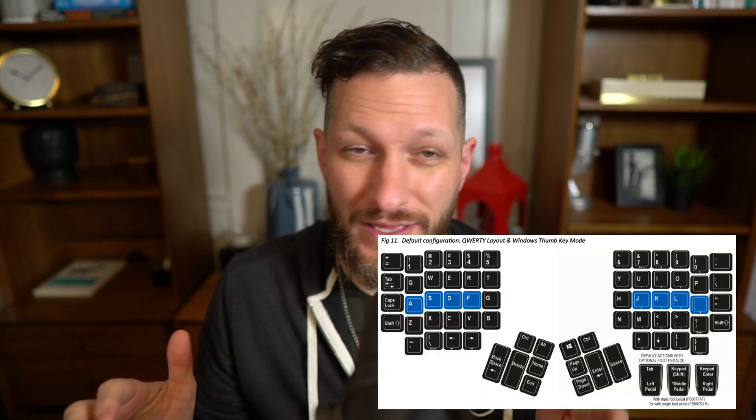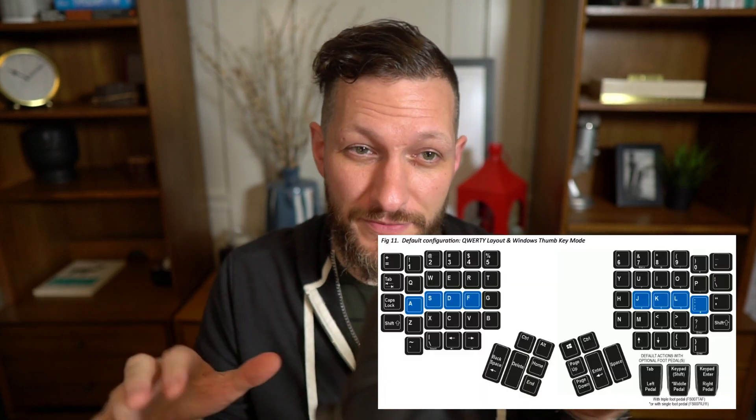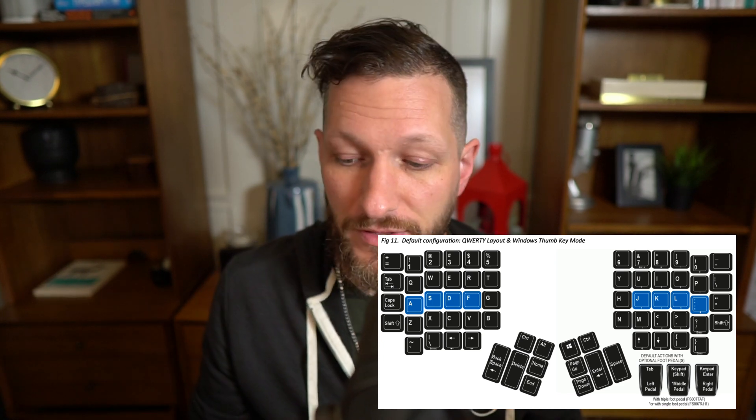At that same time I also switched to the Kinesis Advantage 2 keyboard, which you may have seen in previous videos. It is a freaking space station monster and it's amazing because they're concave, which is the way your hands naturally sit. It does have a learning curve because it uses a different layout — I think it's called ortholinear — basically a layout where a lot of things move to your thumbs instead of your pointer finger. It took quite a while to learn, but it's really fantastic and really helped me with my pain.